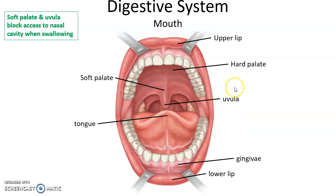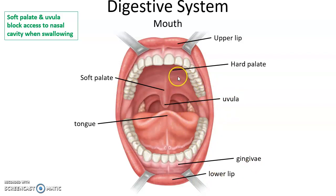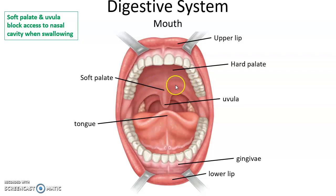The mouth is the beginning of the digestive system. It includes the upper lip and lower lip, the various teeth, the tongue. We have the hard palate — the bony hard palate — which forms part of the roof of the oral cavity. Then the soft palate, made up of muscle and connective tissue.